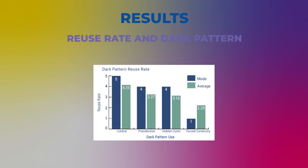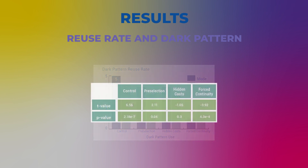Results: After one week the survey reached 33 participants; three blank responses were filled with the average answer. It was hypothesized that DPs would decrease the reuse rate. Participants were most likely to reuse the control, while the aggressive DP forced continuity showed the lowest reuse rate. A one-way ANOVA confirmed a significant relationship between DP use and reuse rate. A post-hoc T-test confirmed which DPs affect reuse — all DP pairs showed statistical significance except pre-selection and hidden costs.